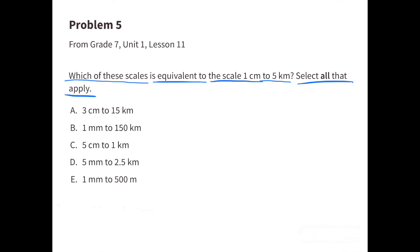Number 5. Which of these scales is equivalent to the scale 1 centimeter to 5 kilometers? Select all that apply. A: 3 centimeters to 15 kilometers — that's equivalent to 1 centimeter to 5 kilometers, because 1 times 3 is 3 and 5 times 3 is 15. D: 5 millimeters to 2 and 5 tenths kilometers is equivalent, because 1 centimeter divided by 2 equals 5 millimeters and 5 kilometers divided by 2 equals 2 and 5 tenths kilometers. Also, 1 centimeter divided by 10 equals 1 millimeter, and 5 kilometers divided by 10 equals 500 meters.